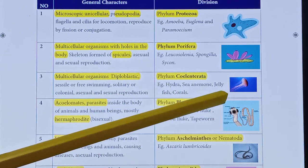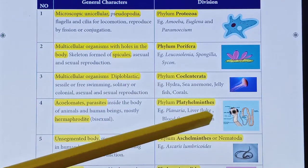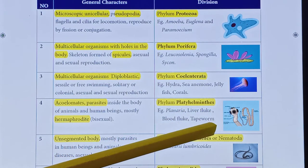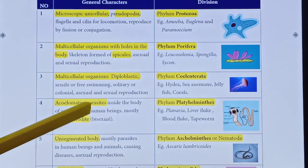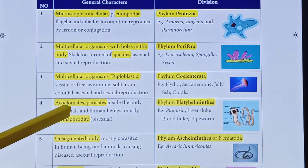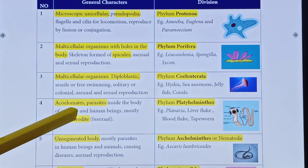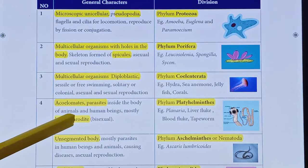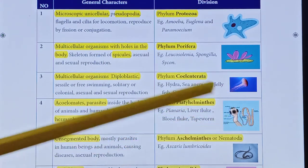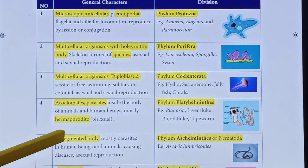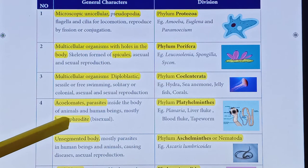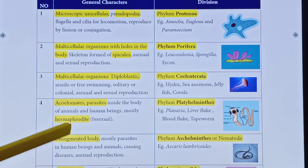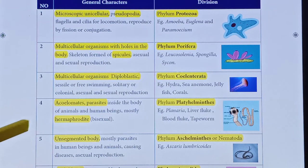Phylum Platyhelminthes examples include planaria, liver fluke, blood fluke, and tapeworm. The special character is that they are acoelomates — absence of a true body cavity. They are parasites inside the body of an animal, and they are hermaphrodites, meaning bisexual — both male and female in the same organism.